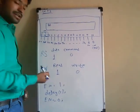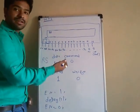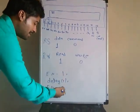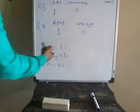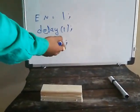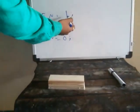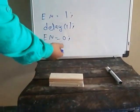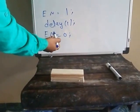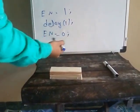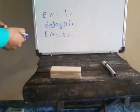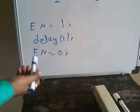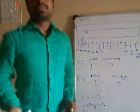The sixth pin is the Enable pin. It is used to latch information to the data pins of the LCD. We give a simple high-to-low pulse on this pin: Enable = 1, then delay, then Enable = 0. As you can see, the high-to-low pulse is shown here.